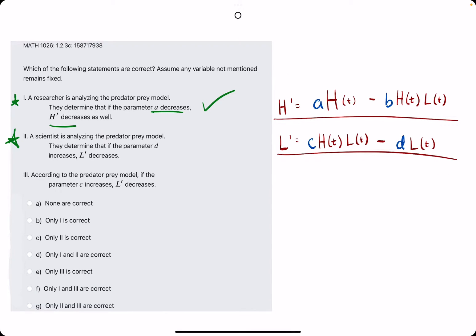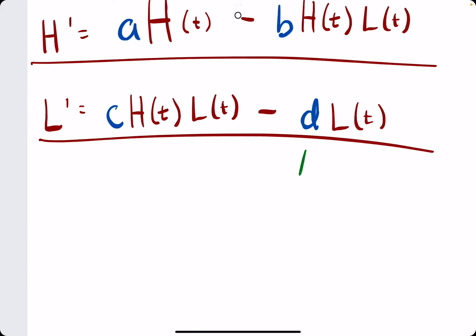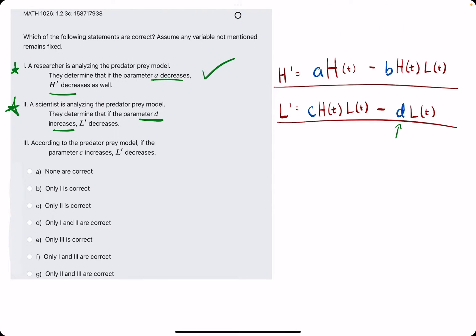Number two: a scientist is analyzing the model. They determined that if D increases, then L' decreases. We're looking at something a little newer here. Is this true?